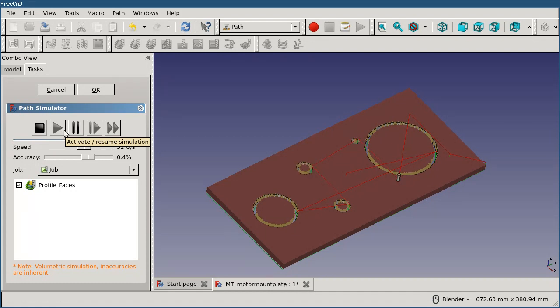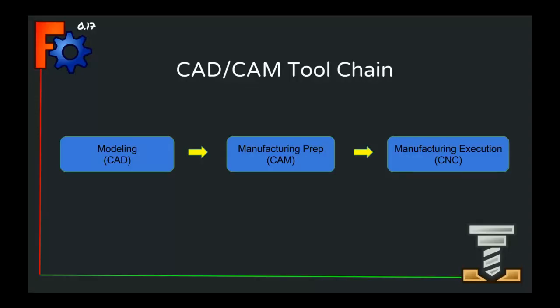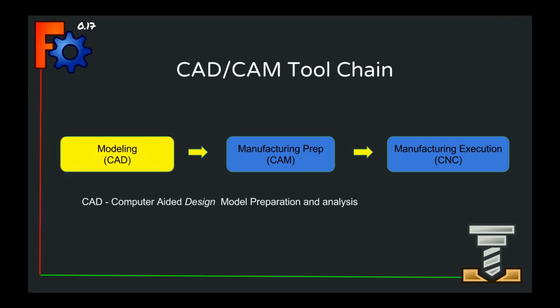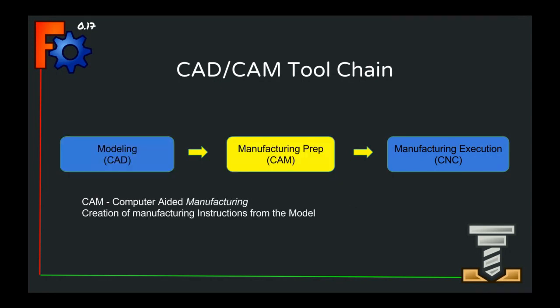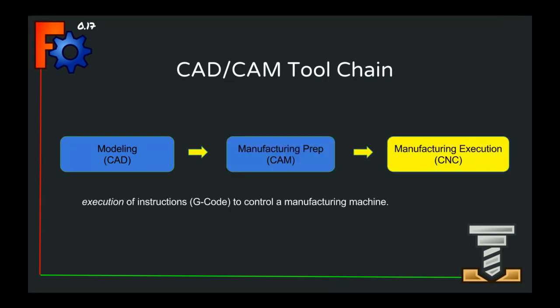CNC is another acronym worth distinguishing. This is a simplified view of the CAD/CAM tool chain. While the goal is the physical manufacturing of a part, the process begins upstream at the design phase. CAD software is used to prepare the model, taking into account the specific technology and material used to manufacture it. Once the design is finished, CAM software produces a set of instructions that will drive the machine. CNC refers to the execution of those instructions on the shop floor, usually in the form of G-code.